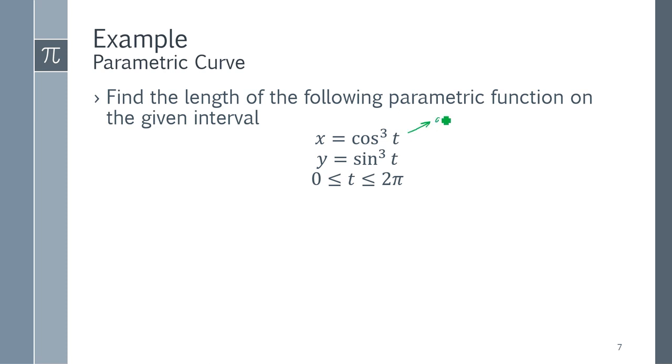Well, I need dx/dt, which would be 3 cosine squared, and then I have a negative sine because of chain rule. And I need dy/dt, which will be 3 sine squared, and then a cosine because of the chain rule.